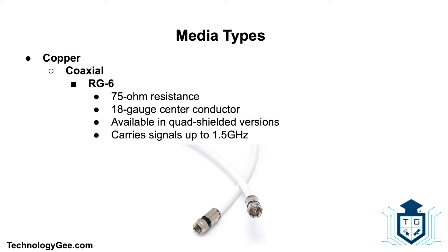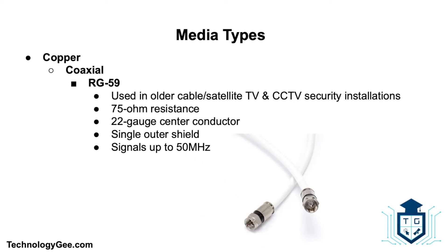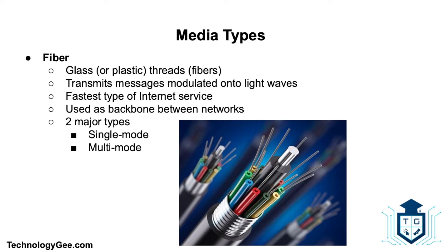RG6 has a 75-ohm resistance, uses an 18-gauge center conductor, is available in quad-shielded versions, and can carry signals up to 1.5 gigahertz, making it much better for HD TV signals. The RG59 is used in older cable TV or satellite TV installations and closed-circuit television security installations. It has a 75-ohm resistance, uses a 22-gauge center conductor with a single outer shield, and is designed for signals up to 50 megahertz.